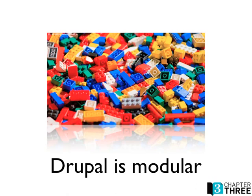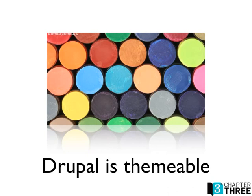Drupal is also theme-able. You might start with a Drupal website, install it out of the box, look at it, and it's okay but isn't exactly what your company is going for. You can go to Drupal.org, download a theme, and with just a click your website looks totally different. There are also sites like top-notch themes where you can buy premium themes. Pretty much all that we do at Chapter 3 is building themes from scratch, because many companies have very specific needs that a contributed theme may not provide.